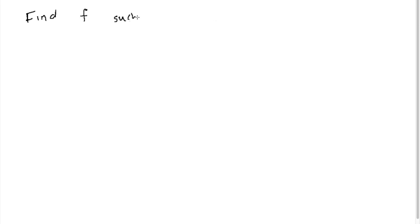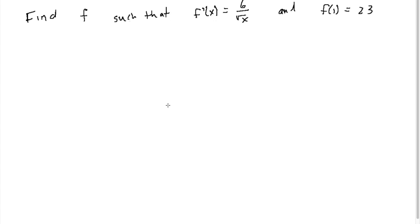Sometimes they talk about general and particular solutions explicitly, but sometimes they're not quite as wordy. They might say: find f such that f'(x) equals 6 over the square root of x, and f(1) equals 23. Looking at this problem, you should start to get the idea they're looking for a general and particular solution. They're giving us f'(x) and asking us to find f — to take the derivative and go backwards using the antiderivative.